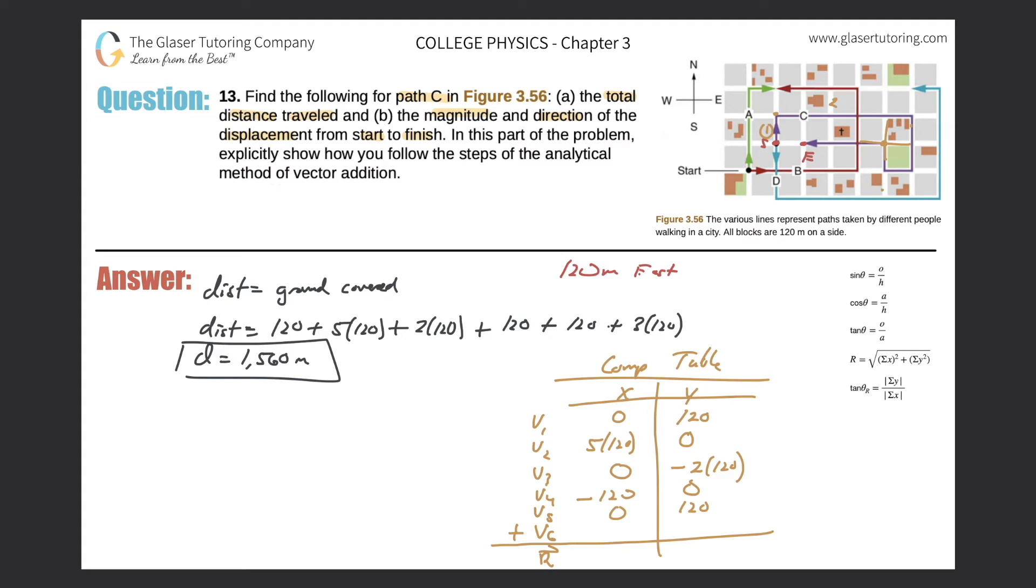Therefore it is negative in that x direction, so it's negative 3 times 120, and there is no y component, so that's zero. Now all we have to do is add it all up. Plug it into your calculator—add up all the x values: zero plus 5 times 120 plus zero minus 120 plus zero minus 3 times 120.